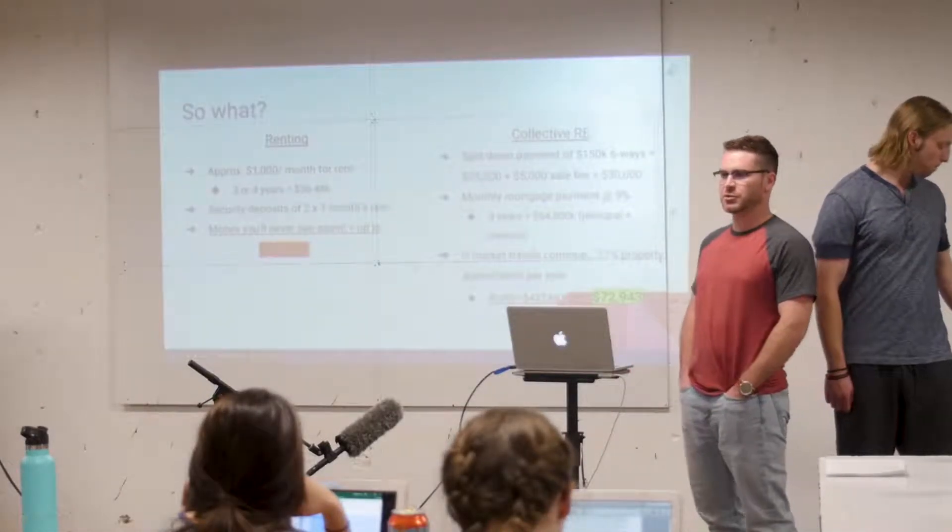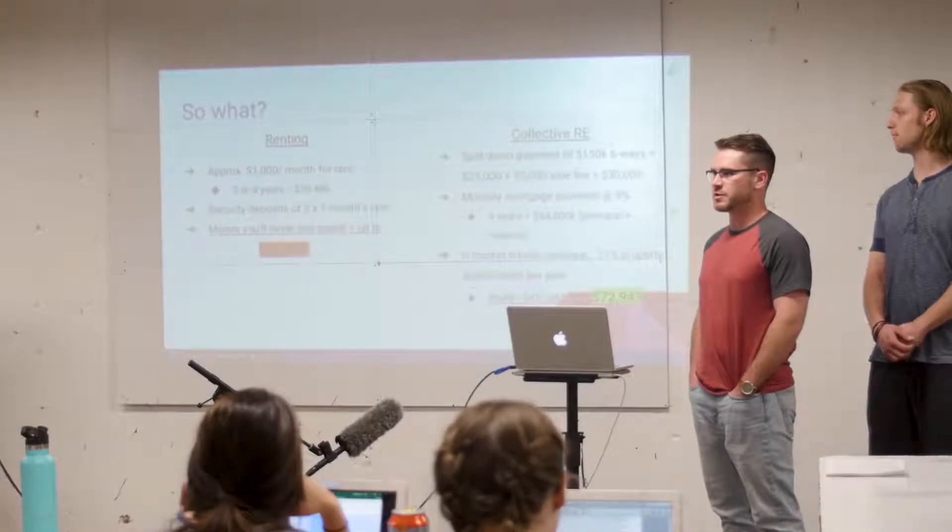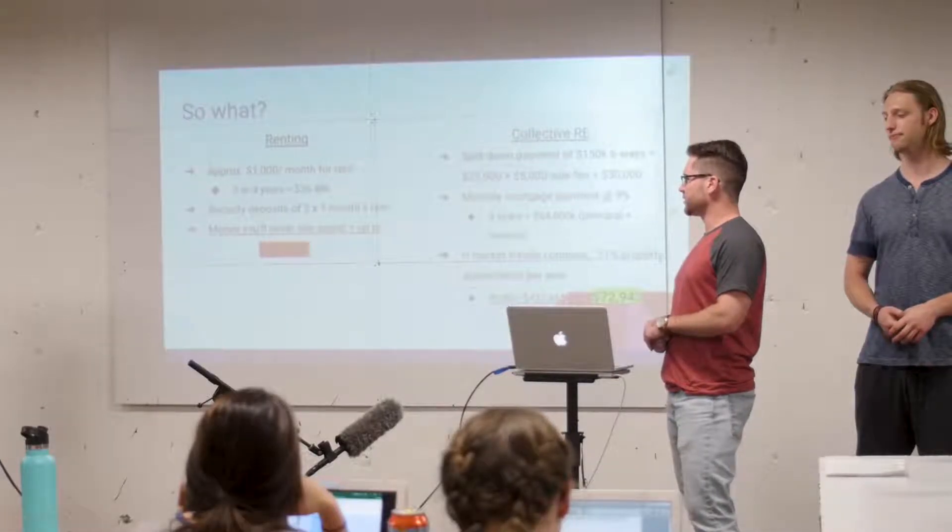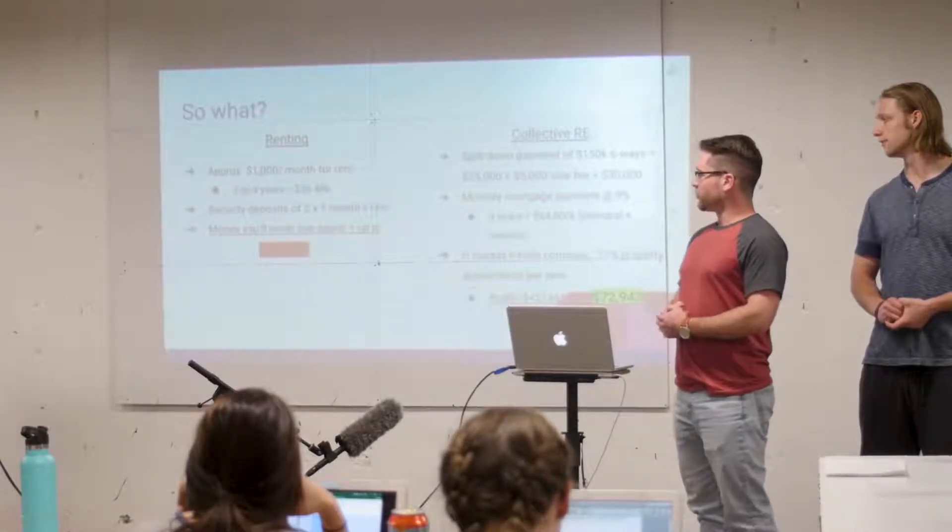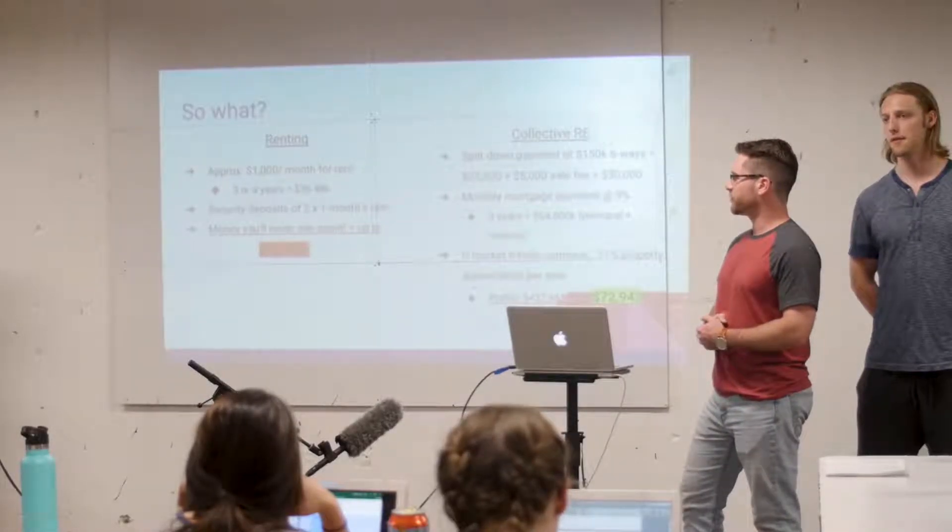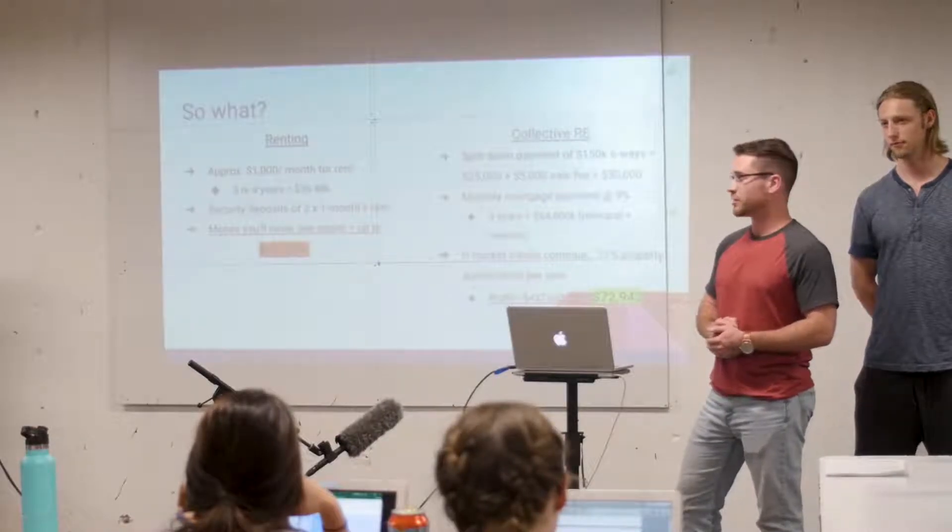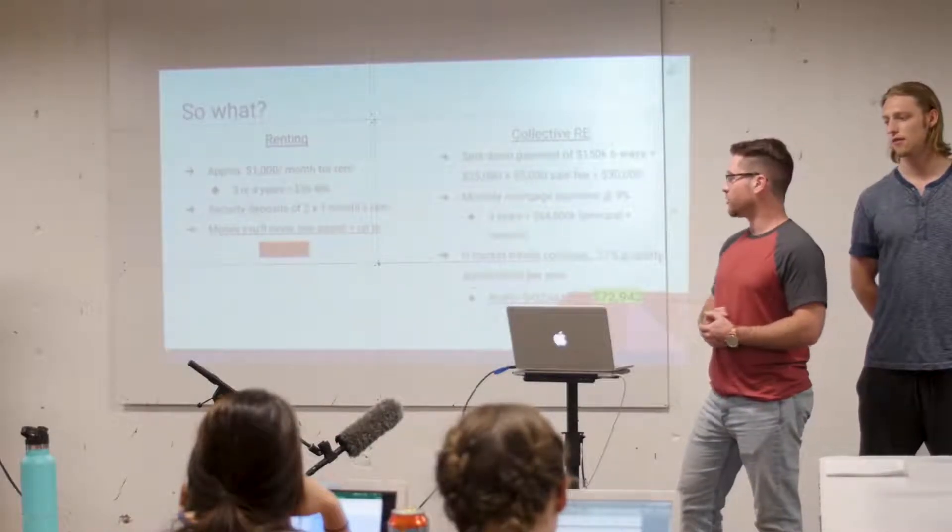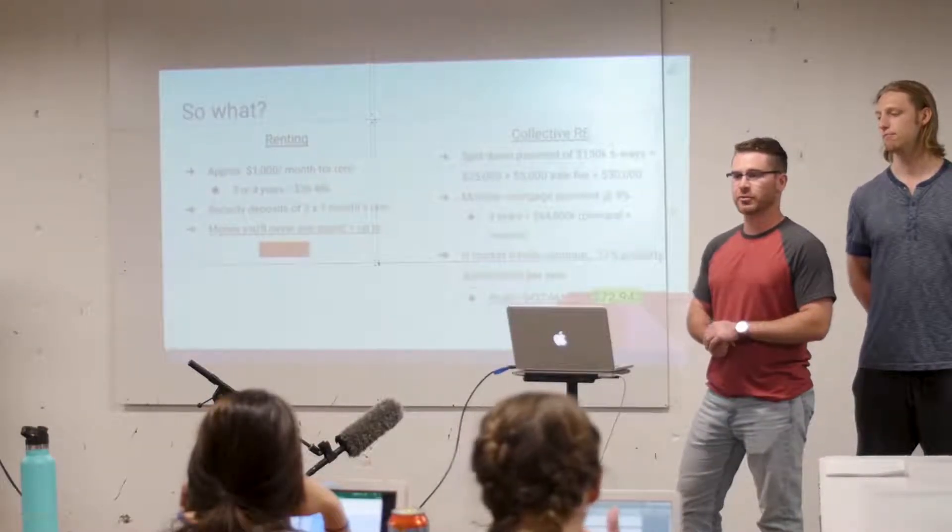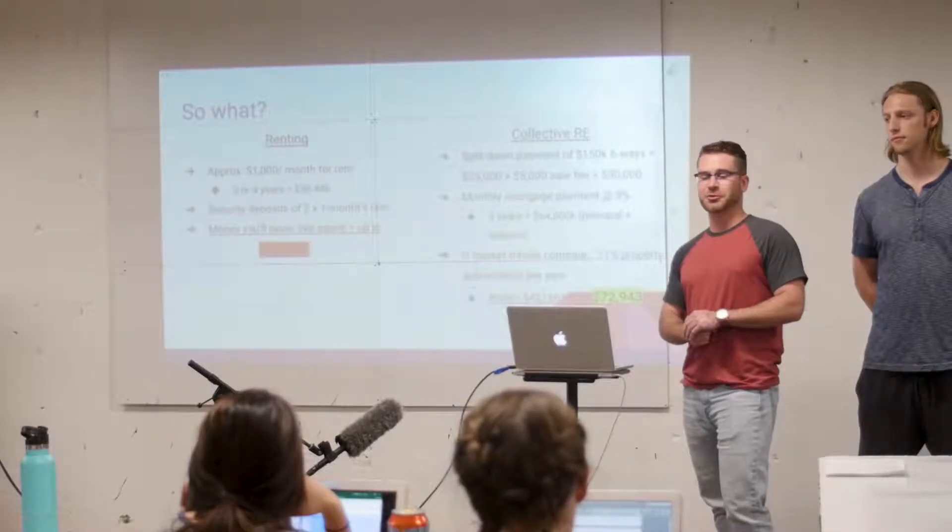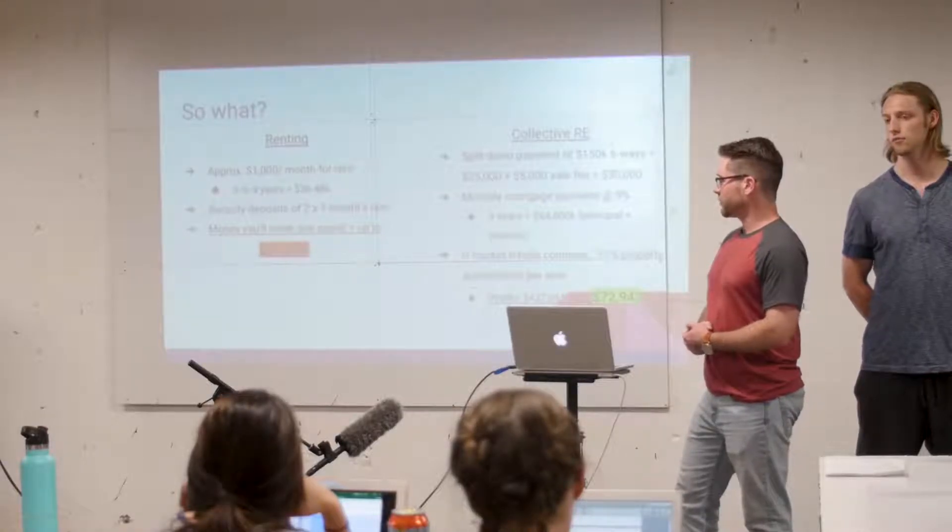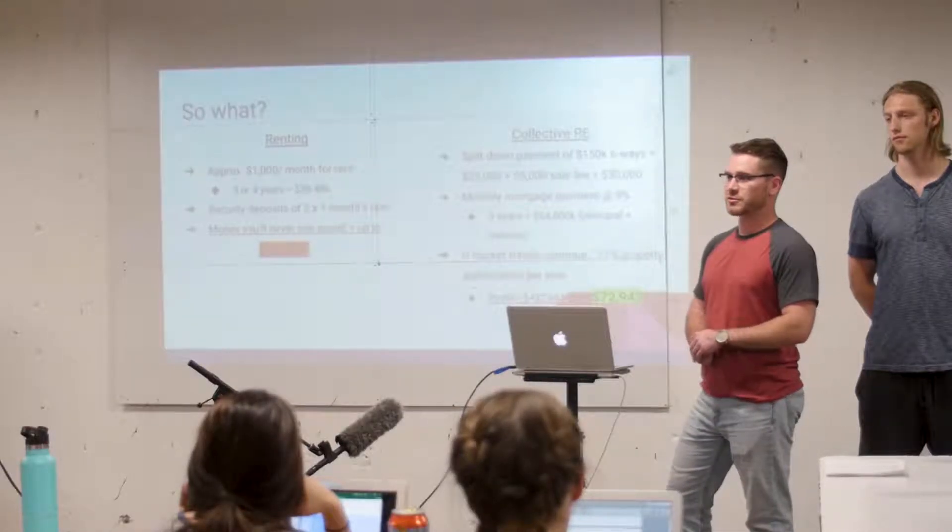So the sell what factor. Why use Collective RE versus just renting a normal property. So we wanted to break this down into numbers. So you guys could really get an idea of what you're losing versus what you're gaining. So when you're renting in a property on the hill, it's probably on average about a thousand dollars a month for rent. After three years, that's $36,000. Four years, that's $48,000. So that's all money just down the drain. And then on top of that, your security deposits. I don't know about you guys, but I've hardly ever seen any of my security deposits back. So that's pretty much lost money too. So after three or four years, that could be up to $56,000 that's just down the drain.